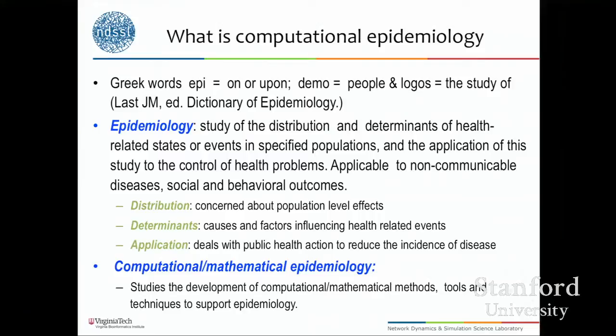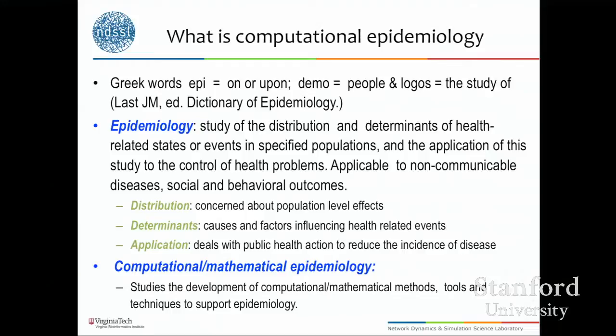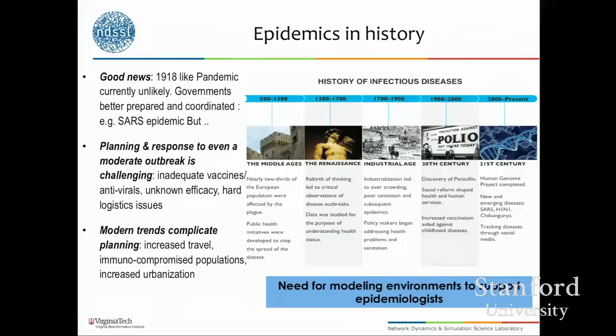The term has been applied in the context of non-communicable diseases as well, and also to things like malware propagation on the internet. Three things are important: you're talking about distributions — population health rather than individual health. That's a distinction between epidemiology and medicine. Second is your interest in causes — the determinants. And finally, your interest in the application: coming up with ways to control epidemics. Computational epidemiology uses mathematical and computational sciences to help epidemiologists address their scientific field.